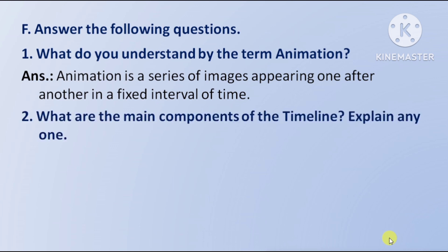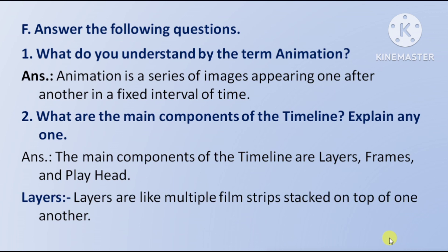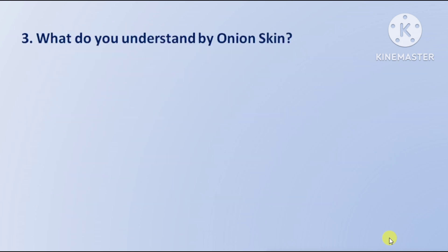Next question: what are the main components of the timeline? Explain any one. Answer: The main components of the timeline are layers, frames, and playhead. Layers: Layers are like multiple film stripes stacked on top of one another — layers multiple film stripes hote hain jo ek doosre ke upar rakhe gaye hote hain.